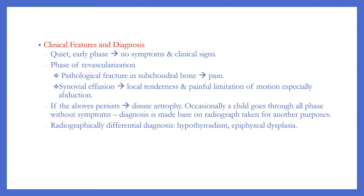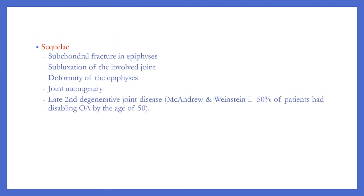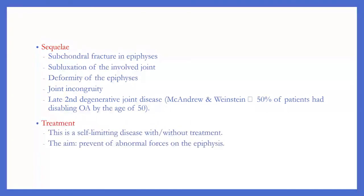Radiographic differential diagnosis includes hypothyroidism and epiphysial dysplasia. Radiographic findings include subchondral fracture in the epiphysis, subluxation of the involved joint, deformity of the epiphysis, and joint incongruity, with late secondary degenerative joint disease. Treatment: this is a self-limiting disease with or without treatment; the aim is to prevent abnormal forces on the epiphysis.